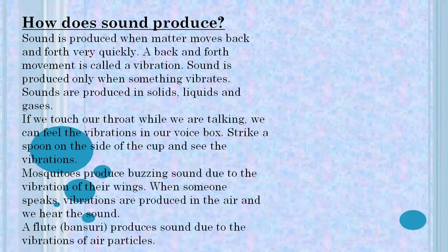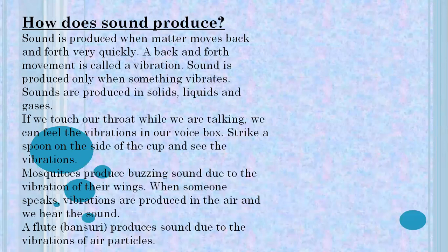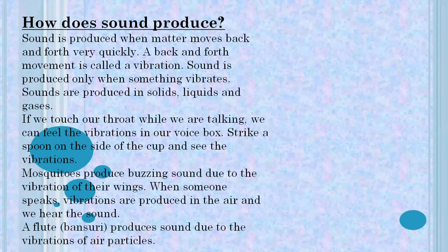Now we will see how sound is produced. Sound production happens when any matter moves back and forth very quickly. This back-and-forth movement — which we discussed in the chapter about energy conversion in the pendulum — is called vibration. When particles move forward and backward and strike with one another, they produce vibrations. Sound is produced only when something vibrates, and sounds are produced in solids, liquids, and gases — in every medium.